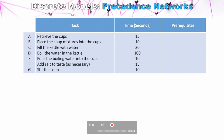Let's start talking about precedence networks — what they represent and the purpose behind using something like a precedence network. Precedence networks are used when we're trying to break down the smaller tasks in a big project. We're going to look at a very simple example, but when projects become really complex — say you're building a house — we could use a precedence network to find the most efficient way to complete that project.